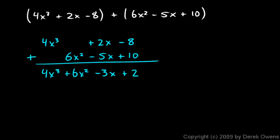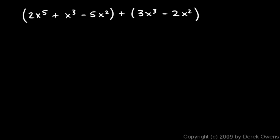So a couple more examples. In this example, I'm given two polynomials and I'm told to add them: 2x⁵ + x³ - 5x² and 3x³ - 2x². So let's rewrite the problem without the parentheses. 2x⁵ + x³ - 5x² + 3x³ - 2x². And we'll combine like terms. This 2x⁵ is all by himself. There are no other x⁵ terms.